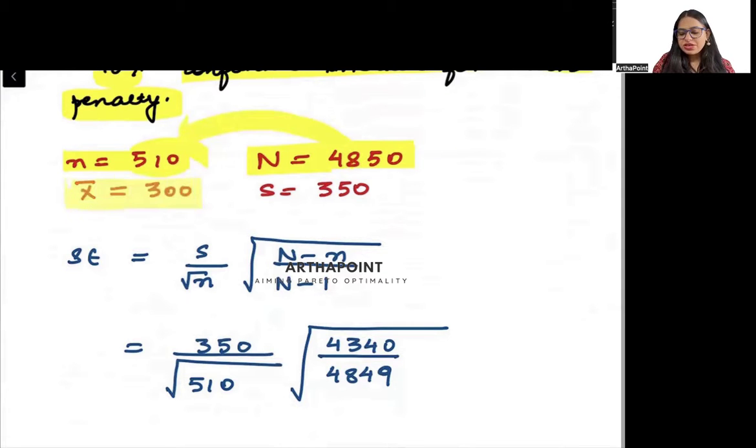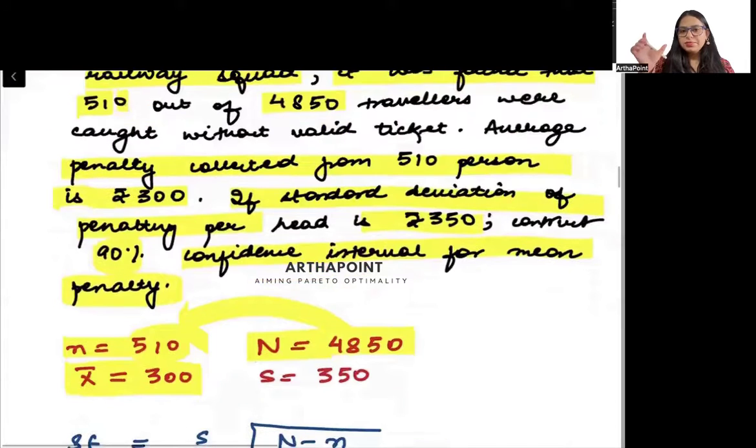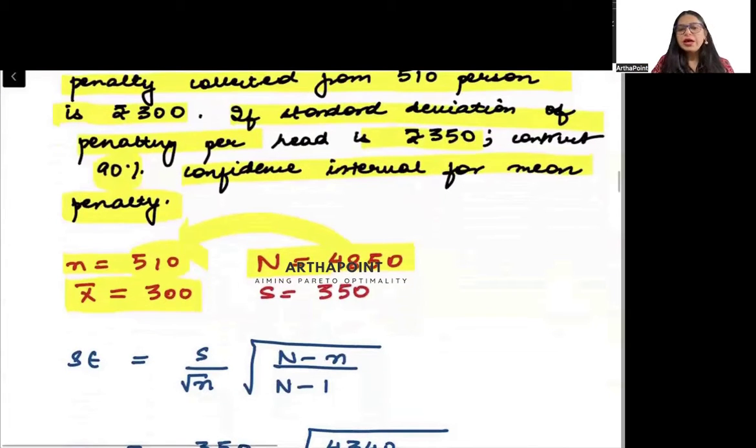You also find out that the mean penalty, the average penalty that they have given is 300, and at the same time, you are also seeing that the standard deviation is 350.